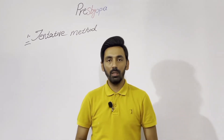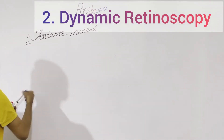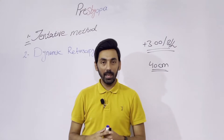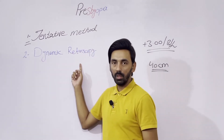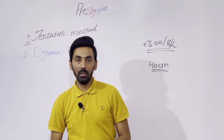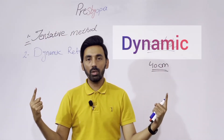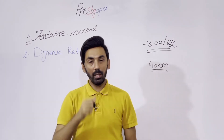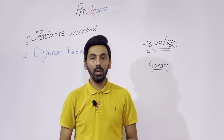Now we will discuss the second method, which is called dynamic retinoscopy. There are two types of retinoscopy: static retinoscopy and dynamic retinoscopy. In static retinoscopy, the accommodation of the patient should be at rest.